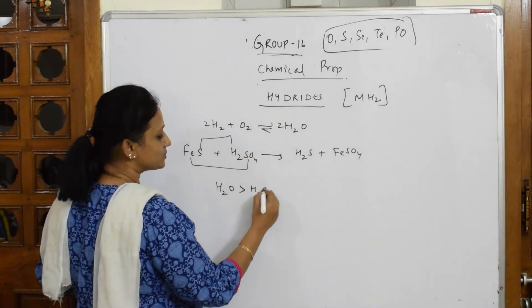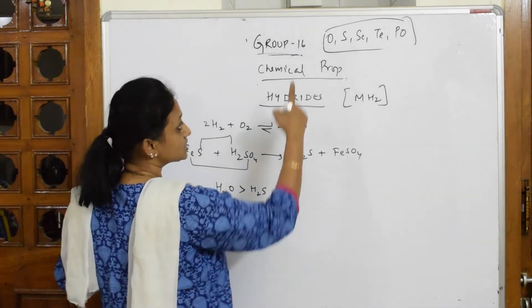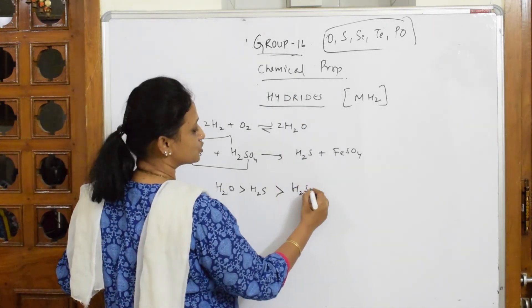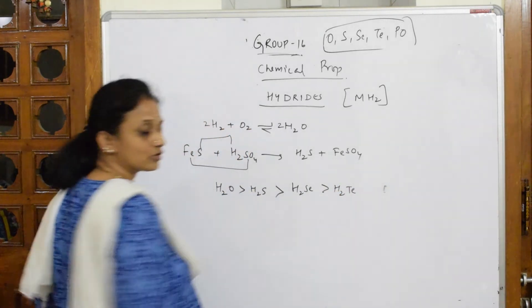For sulfur, H2S. Because see here, M and H2. Next one, it is H2Se. Next is H2Te. Even the polonium we will not take.